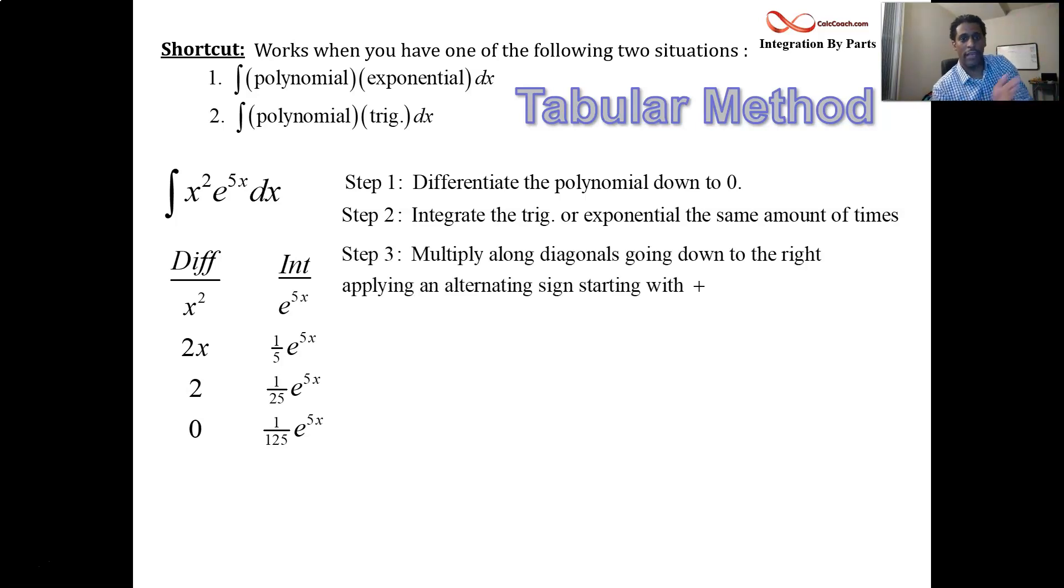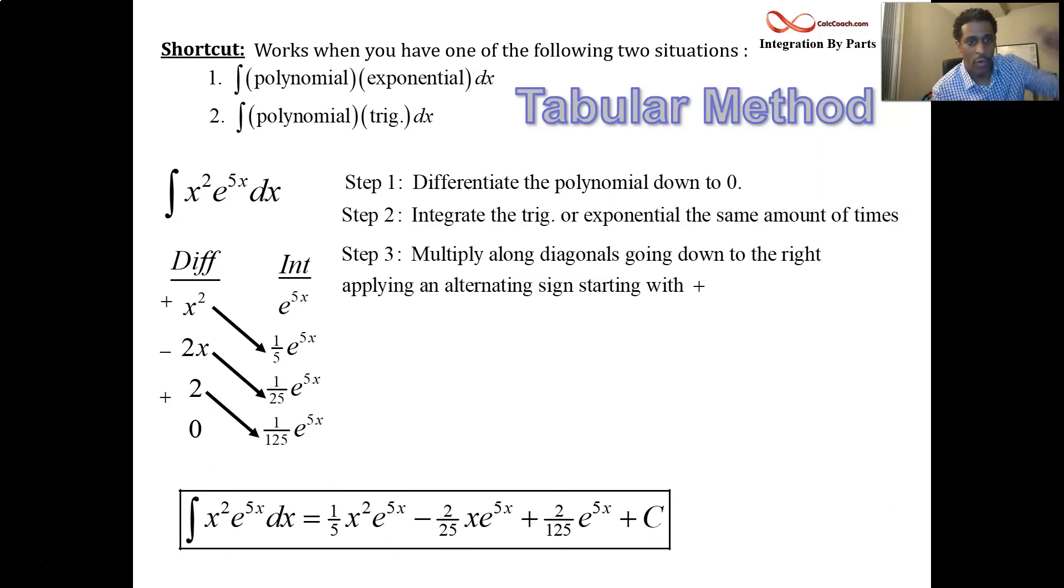Multiply along diagonals going from left, going down and to the right. And applying alternating signs out front. So, plus, minus, plus. We have these three parts to our product. And then we're done. We have the antiderivative in under a minute. 1 fifth x squared e to the 5x. Minus 2x over 25 e to the 5x. Plus 2 over 125 e to the 5x.